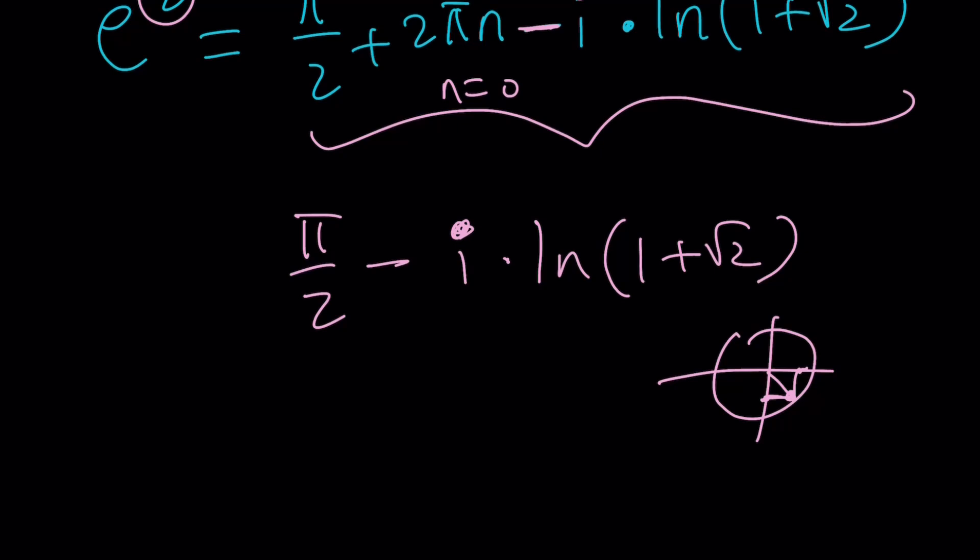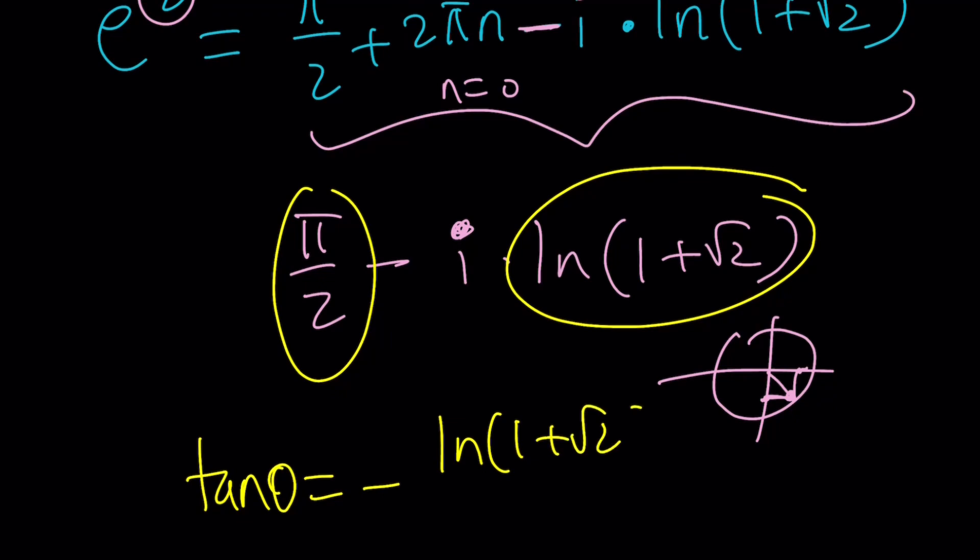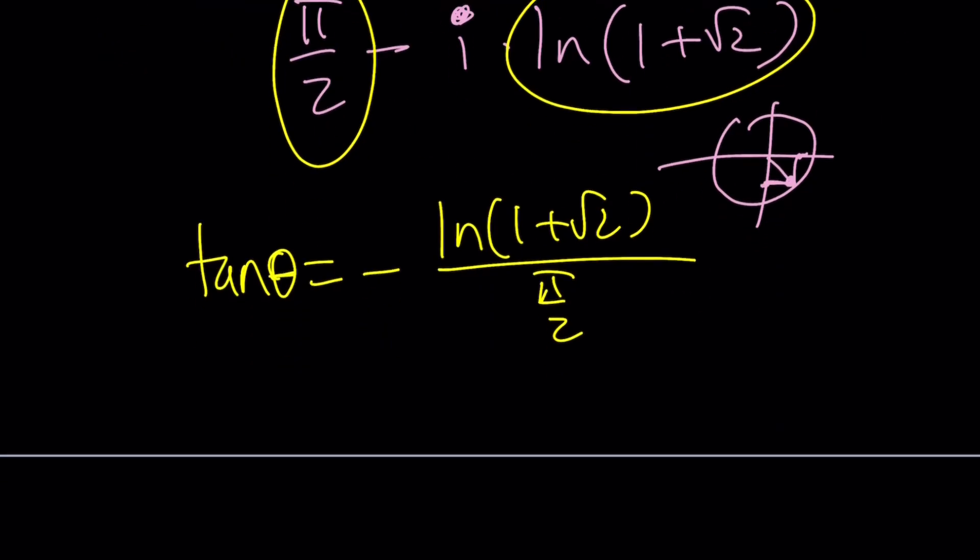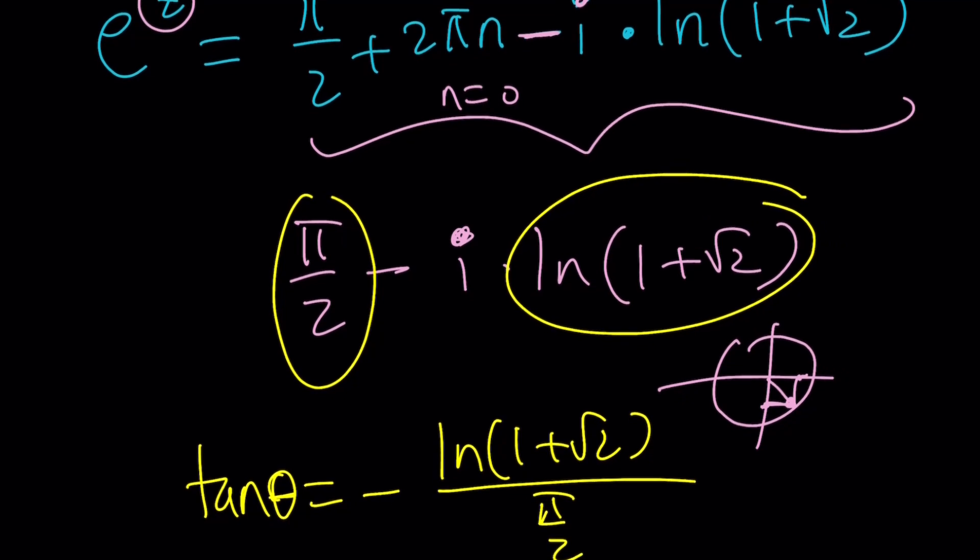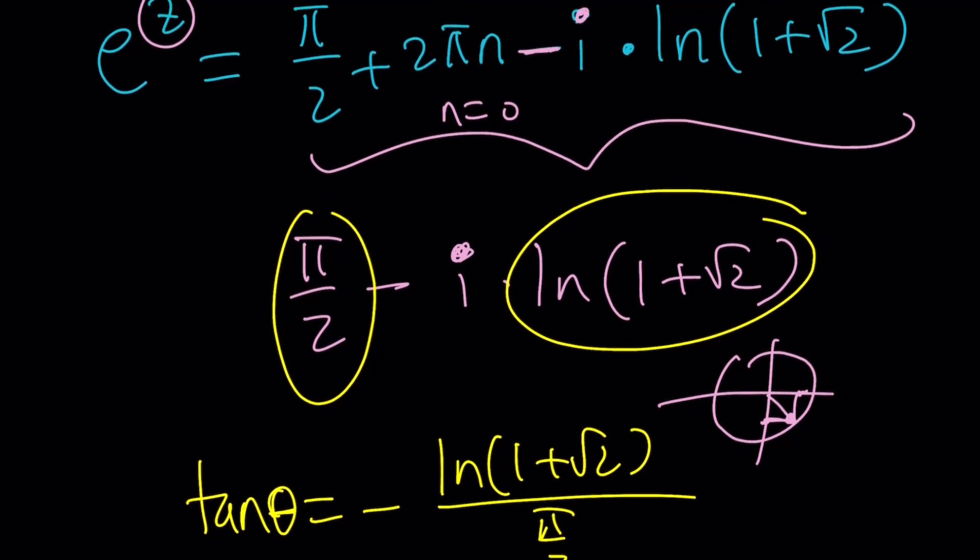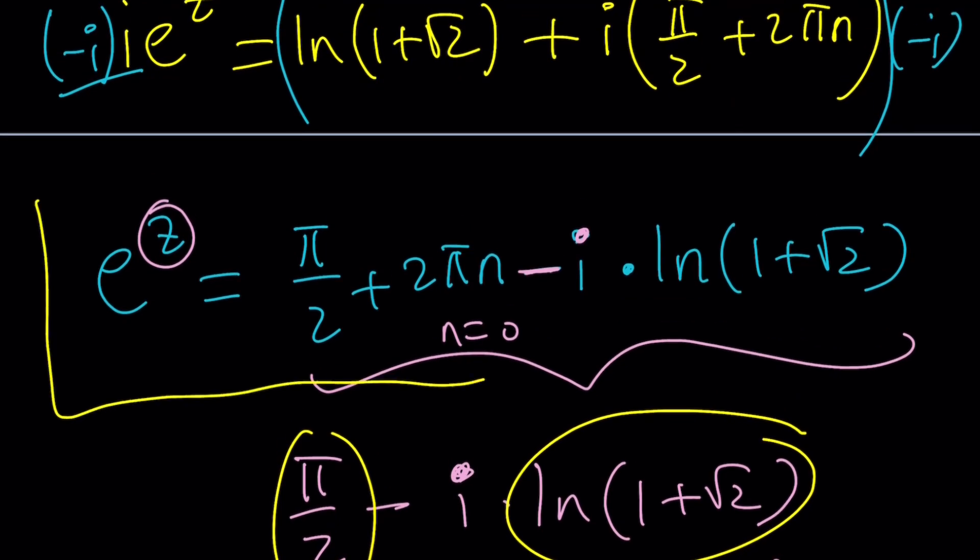Anyways, hopefully you get the idea. But here's what you can do. You can divide this number by that number using the negative sign. So tangent theta is just going to be negative ln 1 plus root 2 over pi over 2. From here, you can find theta by inverse tangenting and then using, I think, another sign for this. And then natural log both sides. But I'm going to leave it at that point. At least we found e to the power of z. Hopefully, you can find z from here.